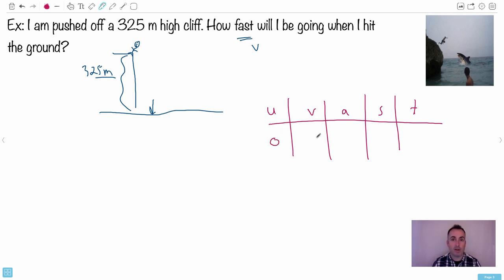V, your final speed, we don't know. In fact it's what we want. So I'm gonna put a star by that one. The acceleration, in this case there's only gravity acting on you, it's the only force acting on you. So because of that, acceleration is gonna be the gravity that you know, 9.81.